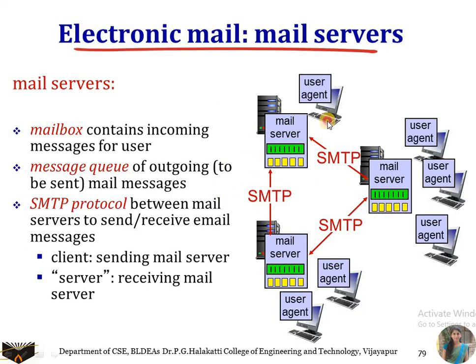The mail server contains two parts: the mailbox and the message queue. The mailbox stores all incoming messages for users. The message queue stores all outgoing messages that need to be sent to other persons, stored in queue form. The SMTP protocol operates between mail servers, transferring email from one mail server to another.